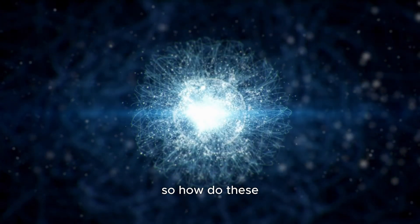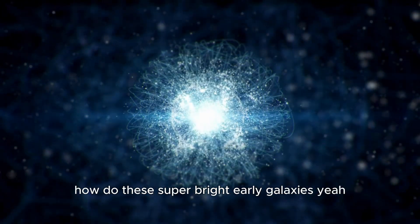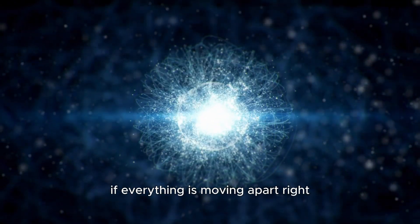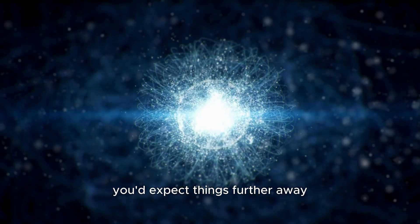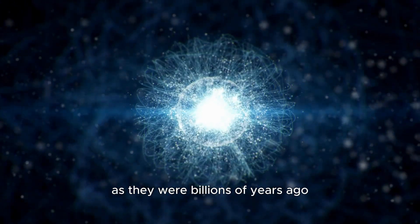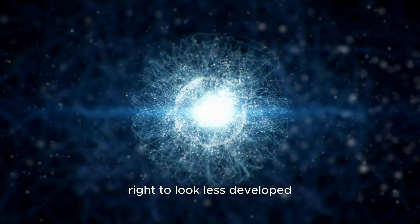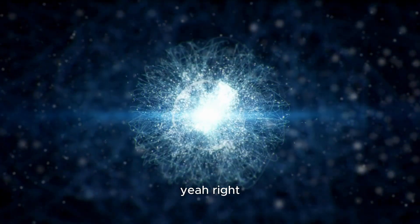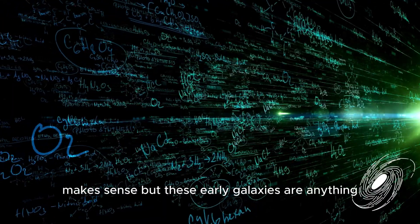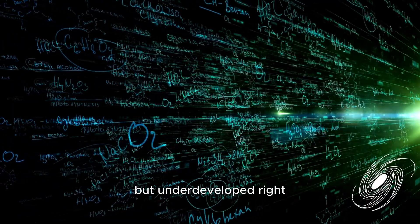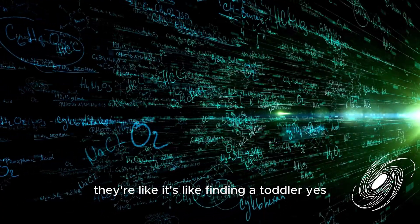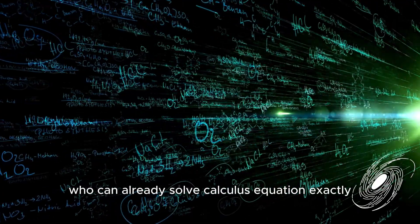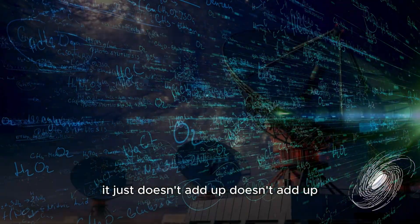I'm with you so far. So how do these super bright early galaxies mess with that idea? Well, if everything is moving apart, you'd expect things further away, the ones we're seeing as they were billions of years ago, to look less developed, younger. Like looking back in time. Makes sense. But these early galaxies are anything but underdeveloped. It's like finding a toddler who can already solve calculus equations. It doesn't add up.